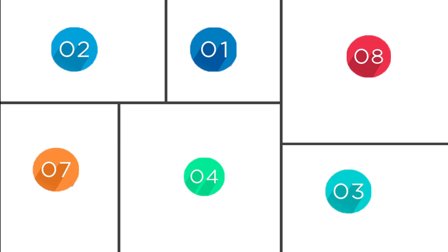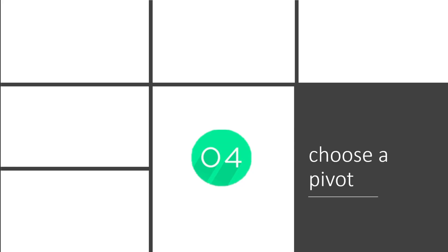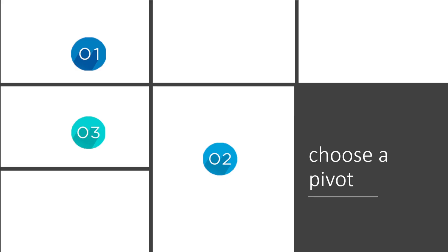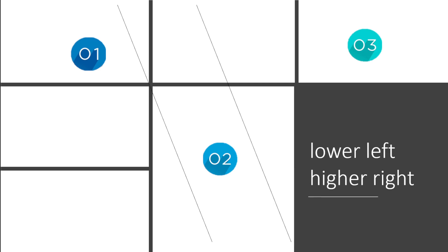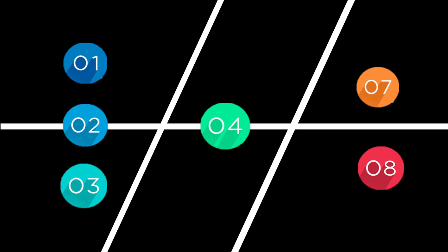Finally, the quick sort. We choose one number called a pivot, then move the lower numbers to the left of it and the higher numbers to the right. So let's choose pivot four — lower numbers to the left, higher numbers to the right. Now it's divide and conquer: take the left-hand side, choose a pivot two, lower to the left, higher to the right. Then the right-hand side — choose a pivot, lower to the left, higher to the right — and we end up with our sorted list.